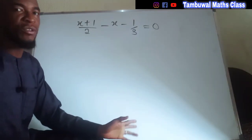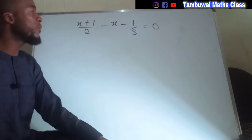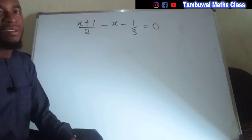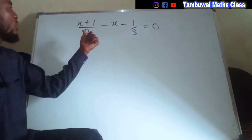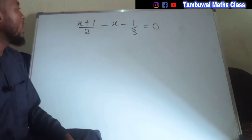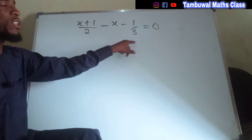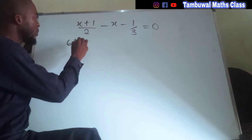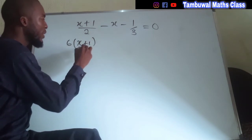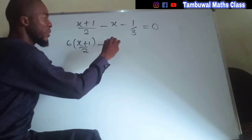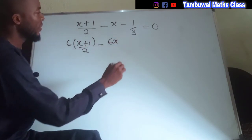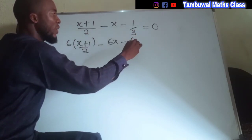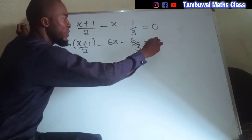This is how to solve an algebraic equation. Now let us look at the second problem. The first thing you need to find is the LCM, the lowest common multiple between the denominators. The denominators are two and three, so the LCM is six — the smallest number which two and three can both go into without remainder. We are going to multiply each of these four terms by six: six multiplied by (x plus 1) over 2, minus six times x, minus six times 1, over 3, equals zero.